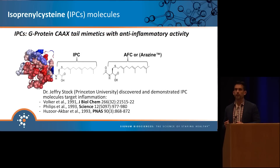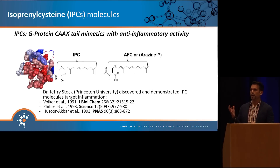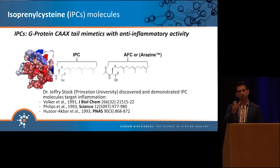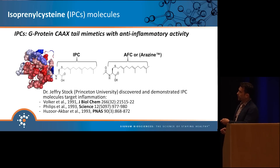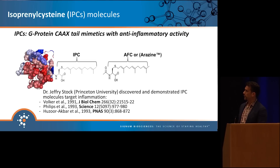All G-proteins — be it small G-proteins like RAS, or the large heterotrimeric G-protein coupled receptors anchored in the cellular membrane — contain a CAX tail motif. This CAX motif is prenylated specifically at the cysteine residue, either by a farnesyl C15 lipid tail or a geranylgeranyl C20 lipid tail, and the enzyme recognizes this CAX motif.